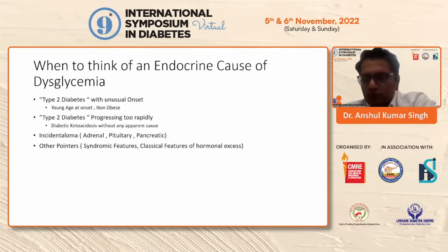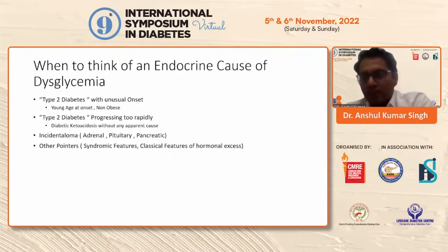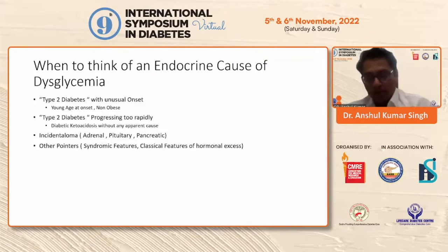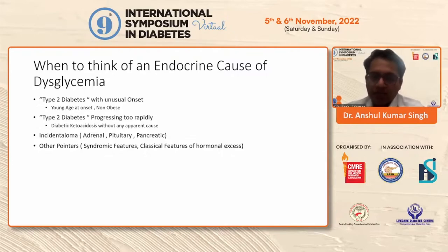When should we suspect an endocrine cause? First, if there is a type 2 diabetes who doesn't fit the bill — for example, somebody with young age at onset, who is non-obese, or somebody with type 2 diabetes which is rapidly progressing. Over two to three years, somebody has gone from being well-controlled on one OAD to two to three OADs, and then maybe on insulin. Also if the patient has suddenly and unexpectedly progressed to diabetic ketoacidosis. In cases of certain incidentalomas — an adrenal tumor, pituitary, or pancreatic tumor — these need to be investigated for the presence of hyperglycemia.